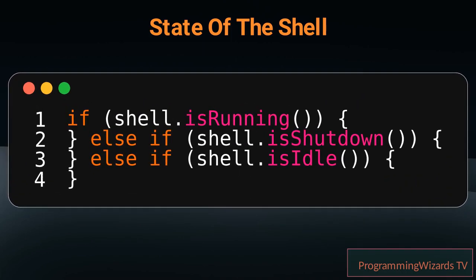You can interrupt waiting for a command to complete in KTSH by calling cancel on the shell instance. Creating a new instance of a shell or executing commands should be done on a separate thread other than the UI thread. This is up to the library user.